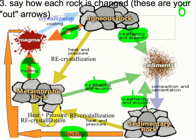Say how each rock has changed — these are your out arrows from every rock. Every rock can be melted into magma, and every rock can be weathered and eroded into sediments, usually deposited as well. That gives you six arrows, for a grand total of six out arrows.